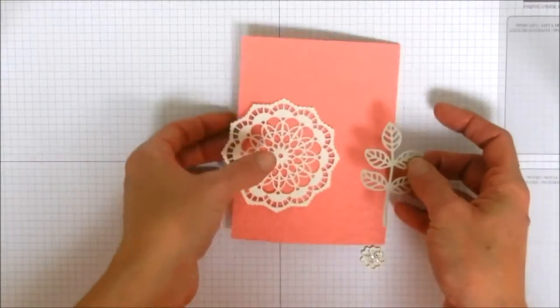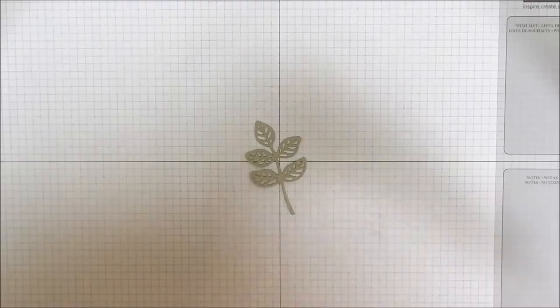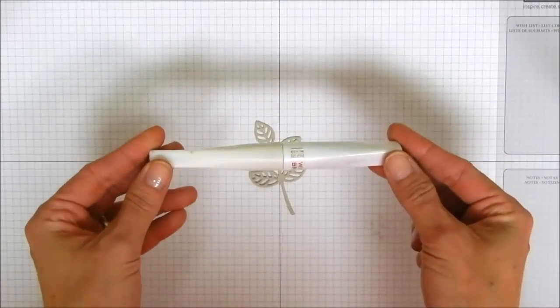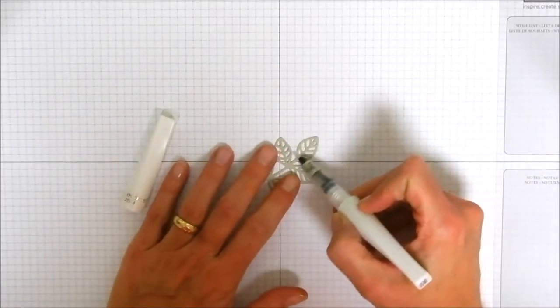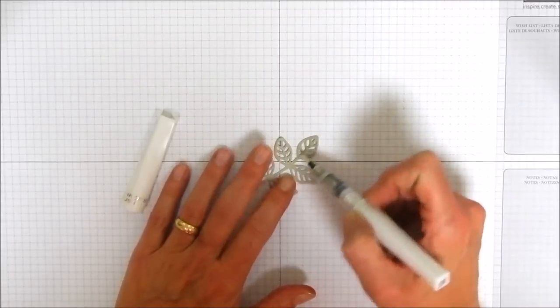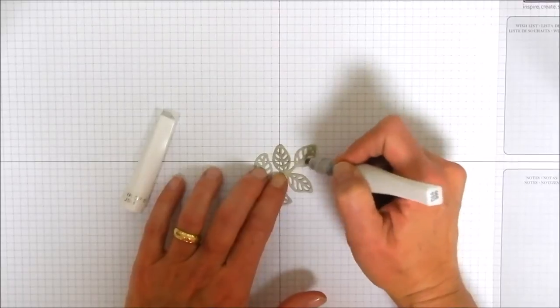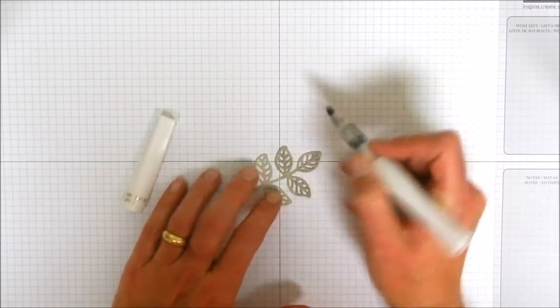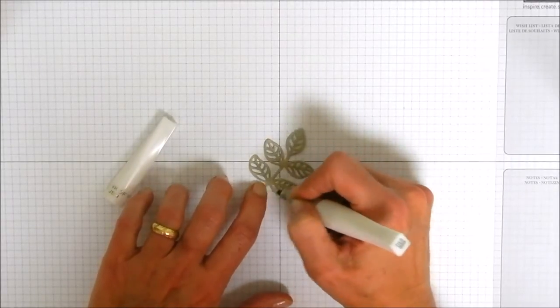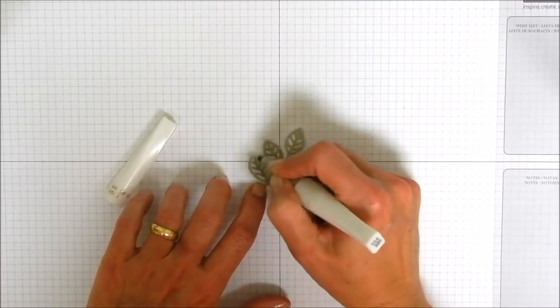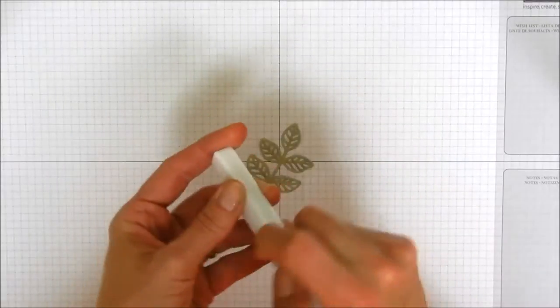The first thing I want to do because I'm just completely addicted to these Wink of Stella glitter pens and this is the clear glitter pen available in our annual catalog and mine is almost empty. But I want to cover this little leaf piece with the Wink of Stella because I just like the glitter that it gives it. It just is a nice little detail for the card. We're not going to be using a bunch of the stem. We are going to cut this little piece up for the front of our card. So I just want to coat the leaves mainly.